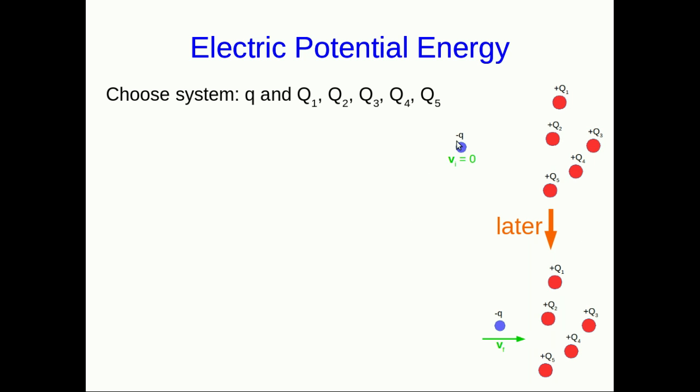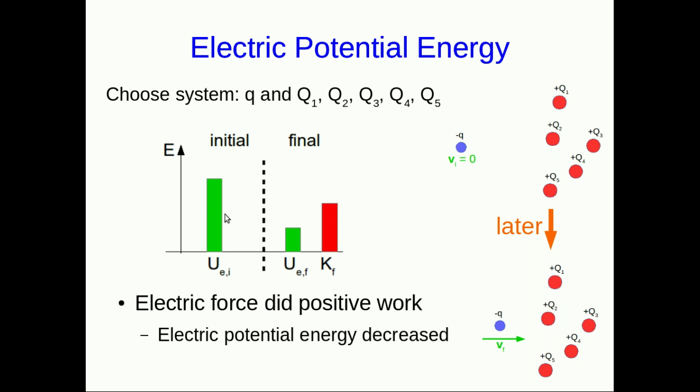Then later on, that charge is going to be moving towards these ones. It will have moved closer, and it's now moving. So what's happened? Well, it's certainly gained kinetic energy, but this system is isolated. And so that kinetic energy must have come from electric potential energy. So we see a decrease in the electric potential energy and an increase in the kinetic energy.